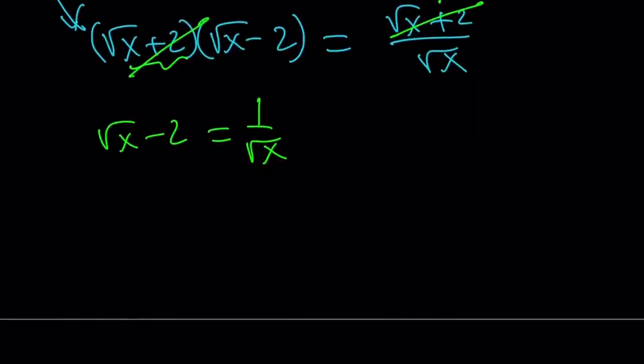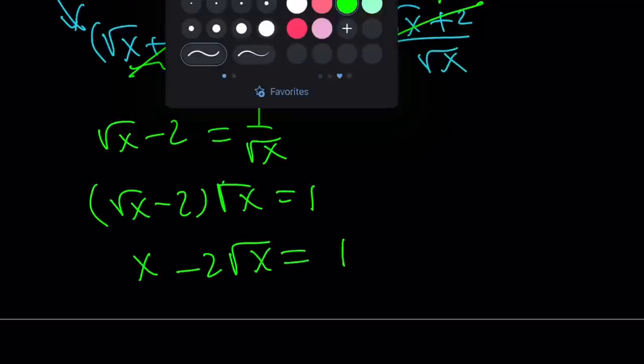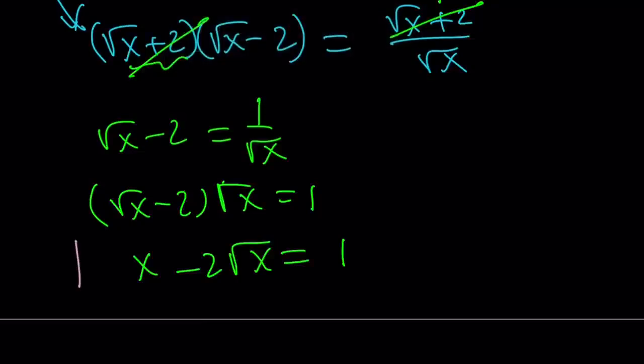And what is that supposed to mean? Cross multiply. Let's do it. Square root of x minus 2 times the square root of x equals 1. If you distribute, you get x minus 2 times the square root of x equals 1. And what was I looking for? I was looking for this one. And we got the answer.